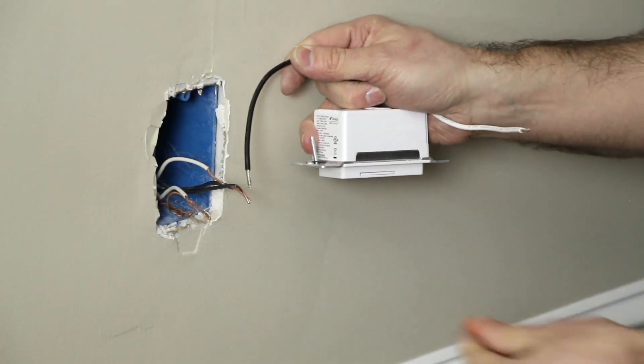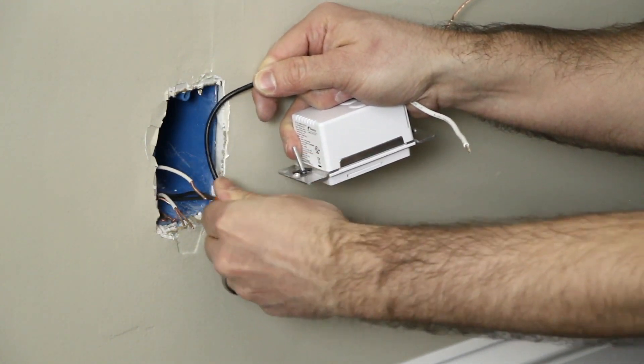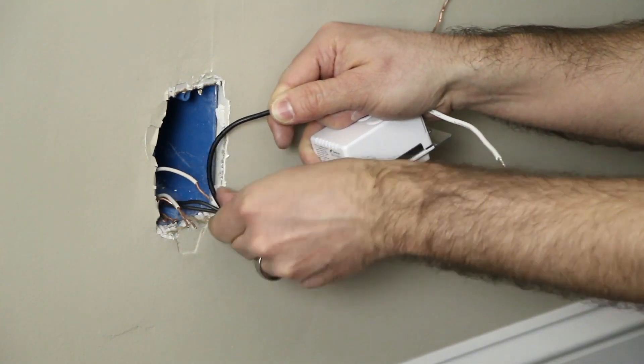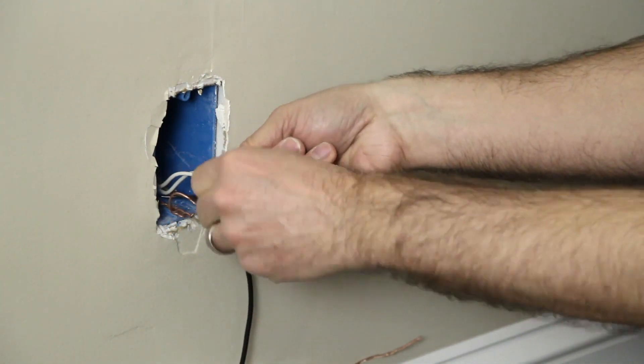When installing the iDevices Wall Outlet, connect the black wire on the back of the wall outlet to the line wires, which are typically black, with the provided wire nuts. If there are multiple black wires, cap them all together.